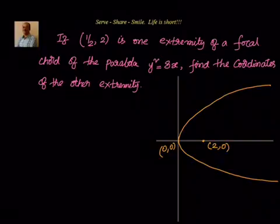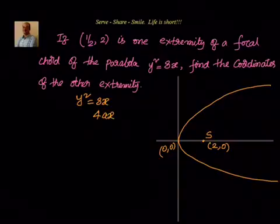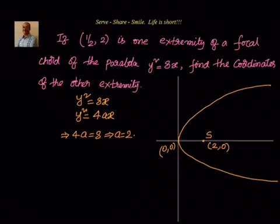Let us say the focus is S. We know that focus is at (2, 0) because y² = 8x is of the form y² = 4ax. Comparing, we have 4a = 8, so a = 2. Once I know a = 2, I know the focus S is at (2, 0).